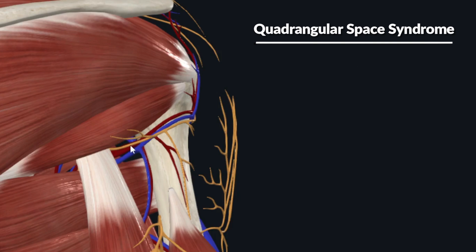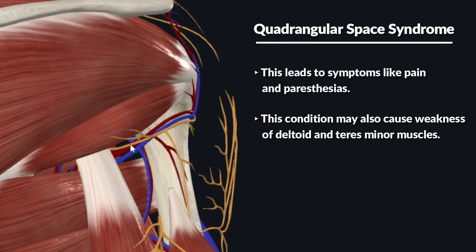The compression of these structures within the quadrangular space leads to symptoms like pain and paresthesias. This compression may also cause weakness of the deltoid and teres minor muscles, because these muscles receive their nerve supply from the axillary nerve.